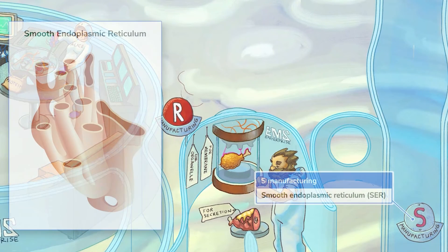Let's move on to the RER's much smoother counterpart: the smooth endoplasmic reticulum, or SER. Remember how the rough ER is littered with ribosomes? Well, the smooth ER has none — nada, zilch. That's because the SER is responsible for synthesizing lipids, and do you know how many ribosomes you need to do that? None.